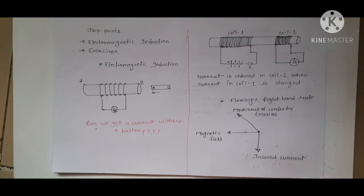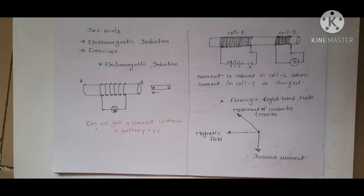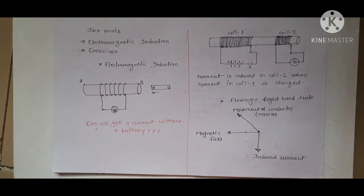Today we are going to study electromagnetic induction, which is very different from all these phenomena. Because until now we have studied the current produced in the circuit and then the magnetic field generated. But in the electromagnetic induction case, this is different — this is opposite. What we have to do here is that the current will be generated from the magnetic field, and we will learn how from today's lecture.